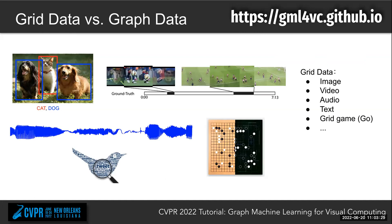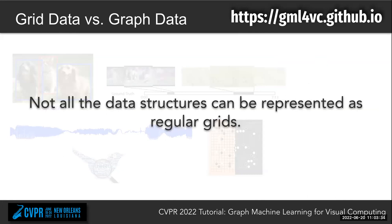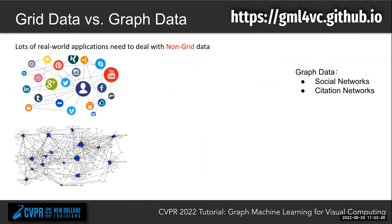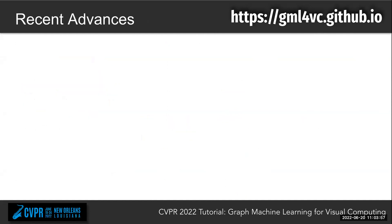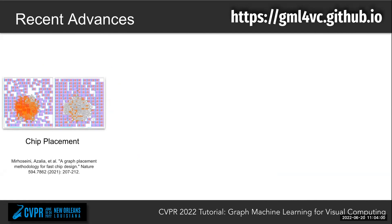However, in lots of real-world applications, there are data that don't lie on those regular grids — such as very complex graph-structured data like social networks, citation networks, molecules, 3D point clouds, and 3D meshes. For those data, we need a powerful tool to represent them. Graph networks are going to be one of the most promising tools to represent those complex data structures.